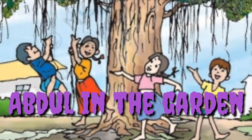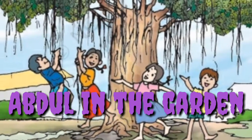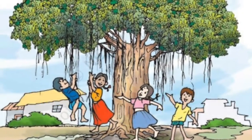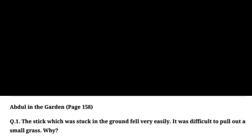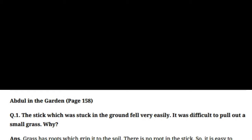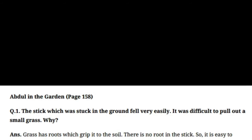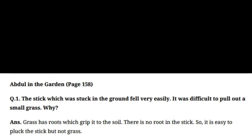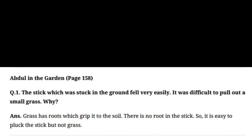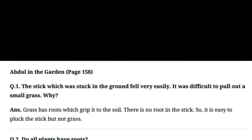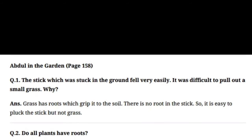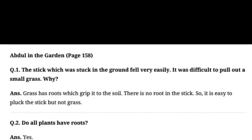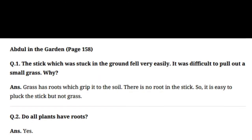Hello students, today we are going to do the exercise of Abdul in the garden. Question number one: the stick which was stuck in the ground fell very easily, but it was difficult to pull out a small grass. Why? The answer is grass has roots which grip it to the soil. There is no root in the stick, so it is easy to pluck the stick but not grass.